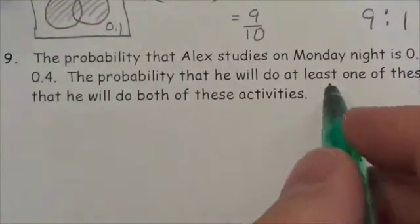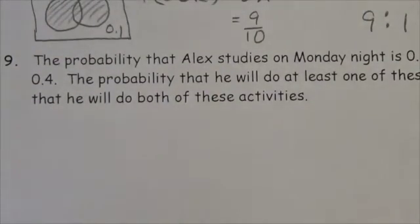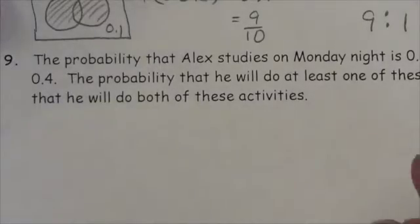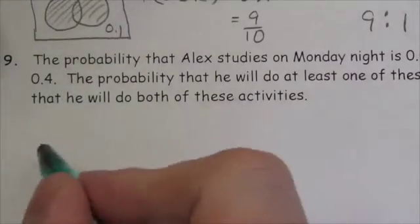Okay, so the probability that Alex studies on Monday night is 0.5. Now this is starting to feel like a Venn diagram problem already. The probability that he'll play soccer is 0.4. Yep, here we go.